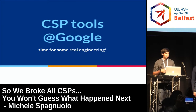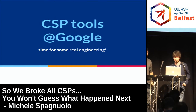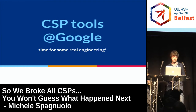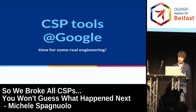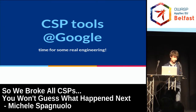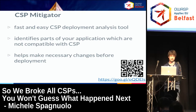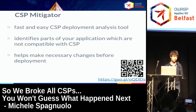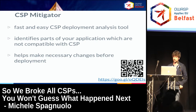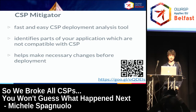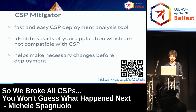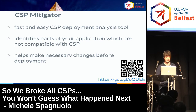I'll now hand over to Michele, who will talk about tools we developed at Google to make CSP deployment easier. We took CSP as it was a little more than a year ago, found problems with the whitelist/origin model, added strict-dynamic, and deployed at scale. This created a need for serious tooling to prototype policies, monitor violations, and assess policy quality. The first tool is a Chrome extension called 'CSP Mitigator' — a CSP deployment analysis tool that identifies parts of a page not compatible with CSP, even graphically.